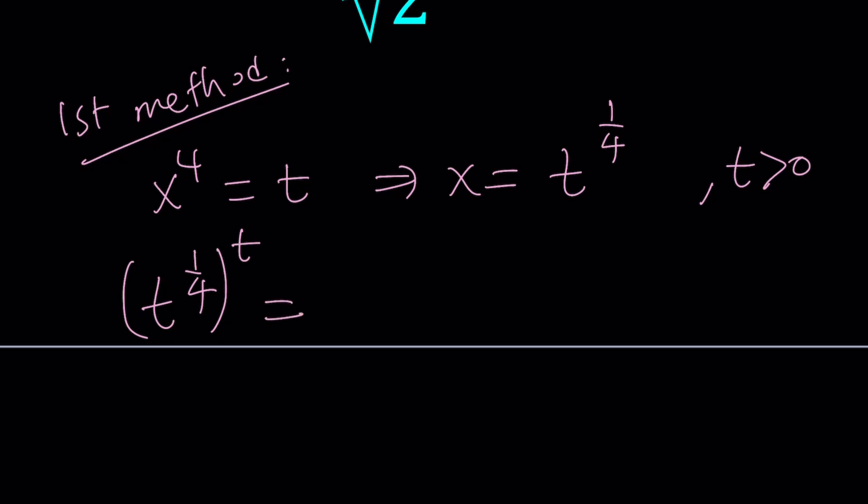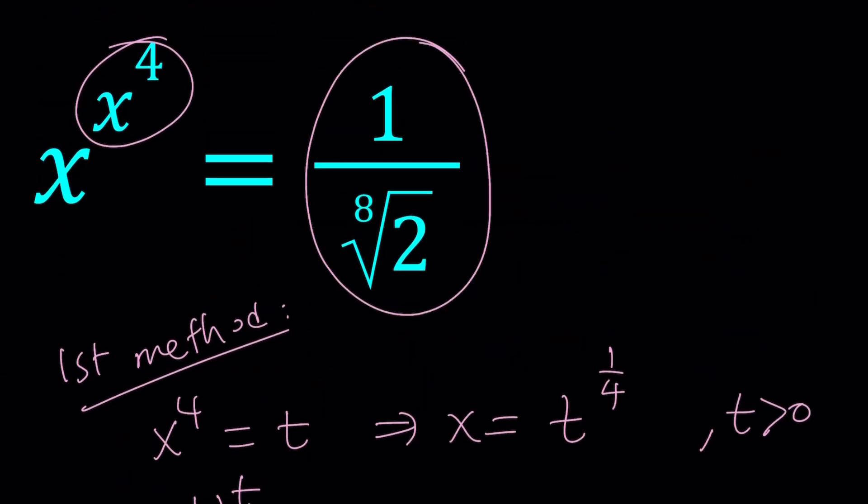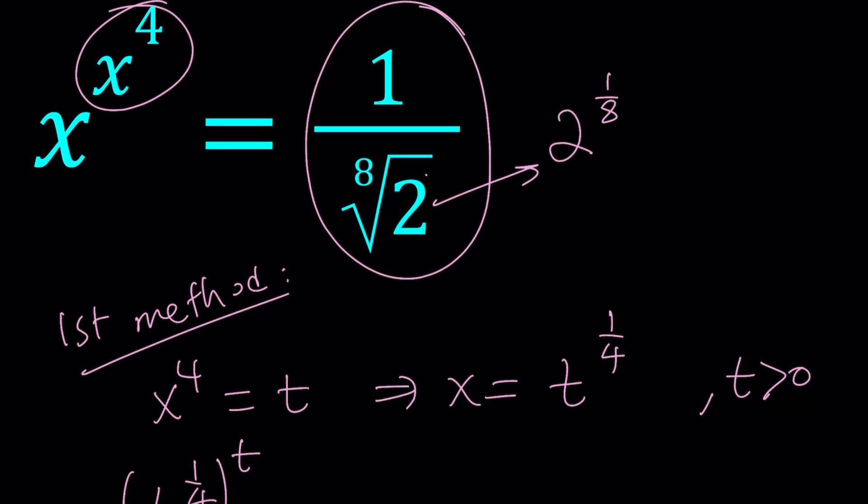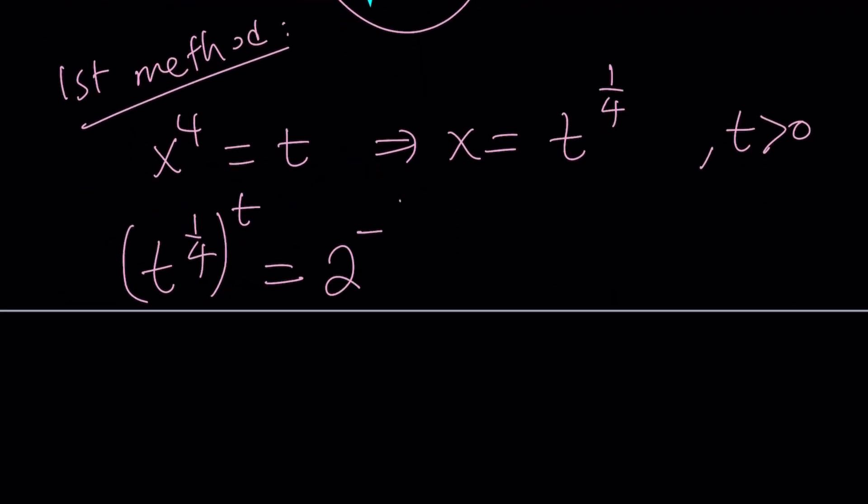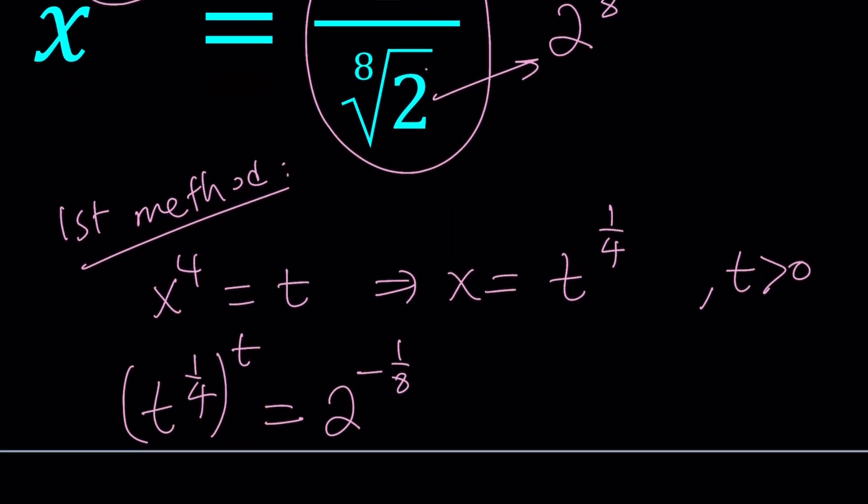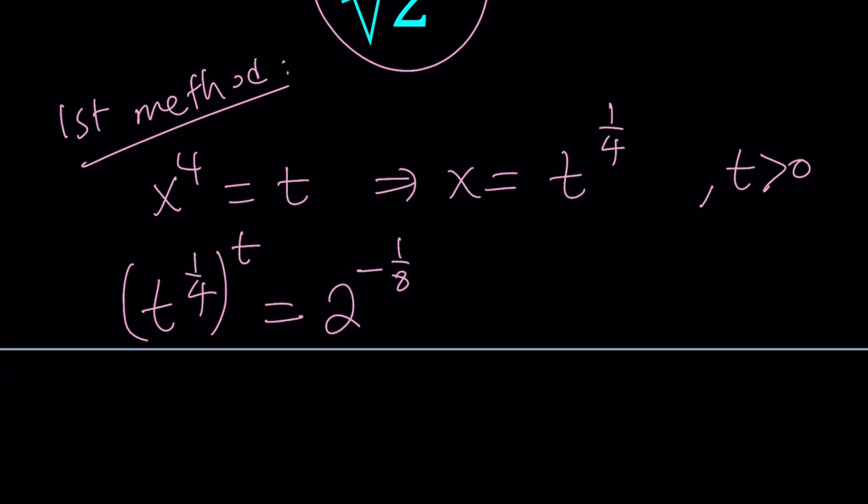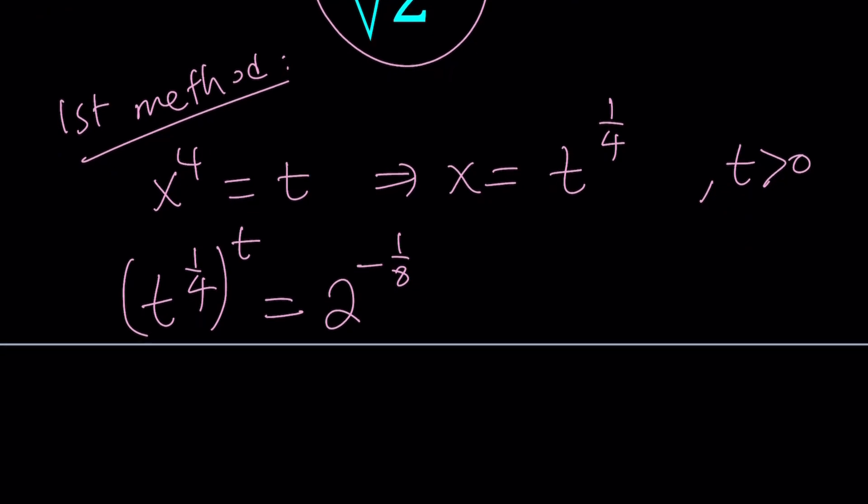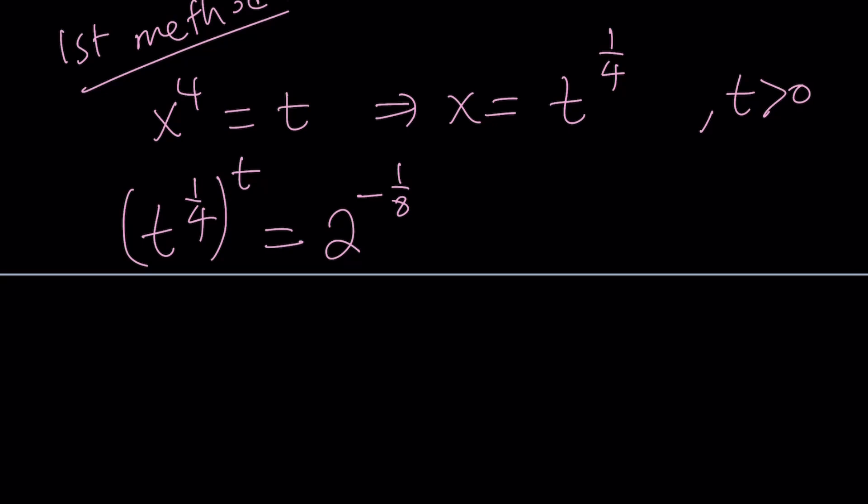I'm going to replace x with t to the power 1 fourth and I'm going to replace x to the fourth with t. So I get the following equation. And right-hand side is a radical, but I can write it as 2 to the power. By the way, the bottom is 2 to the power 1 eighth. But since it's 1 over, it's a reciprocal, I'm going to use a negative exponent for this. So, I can write it as 2 to the power negative 1 eighth.